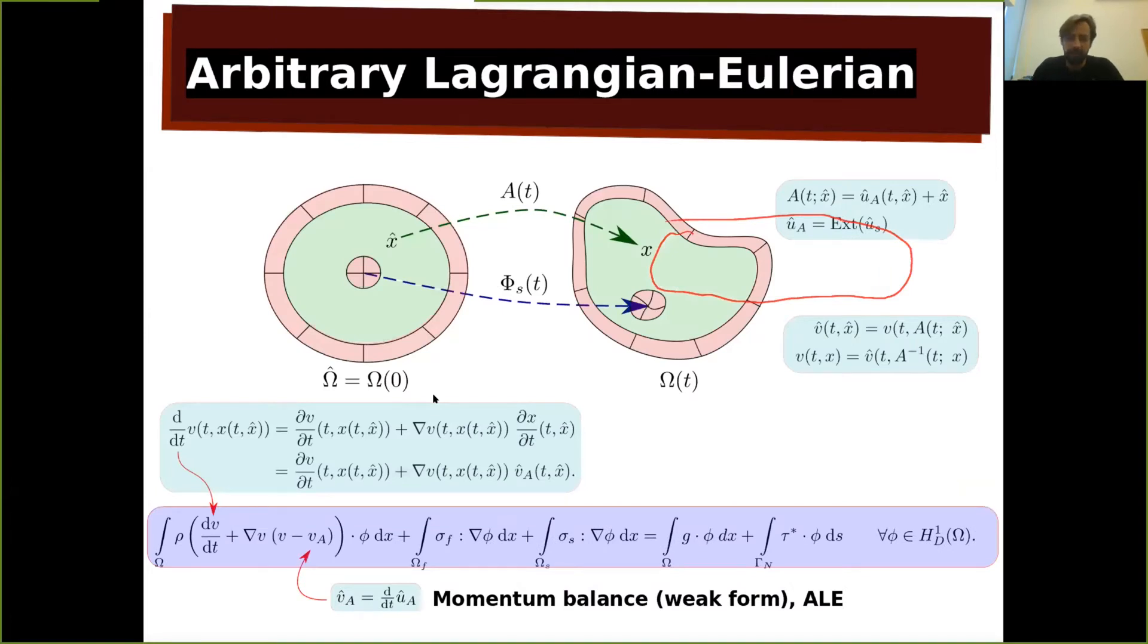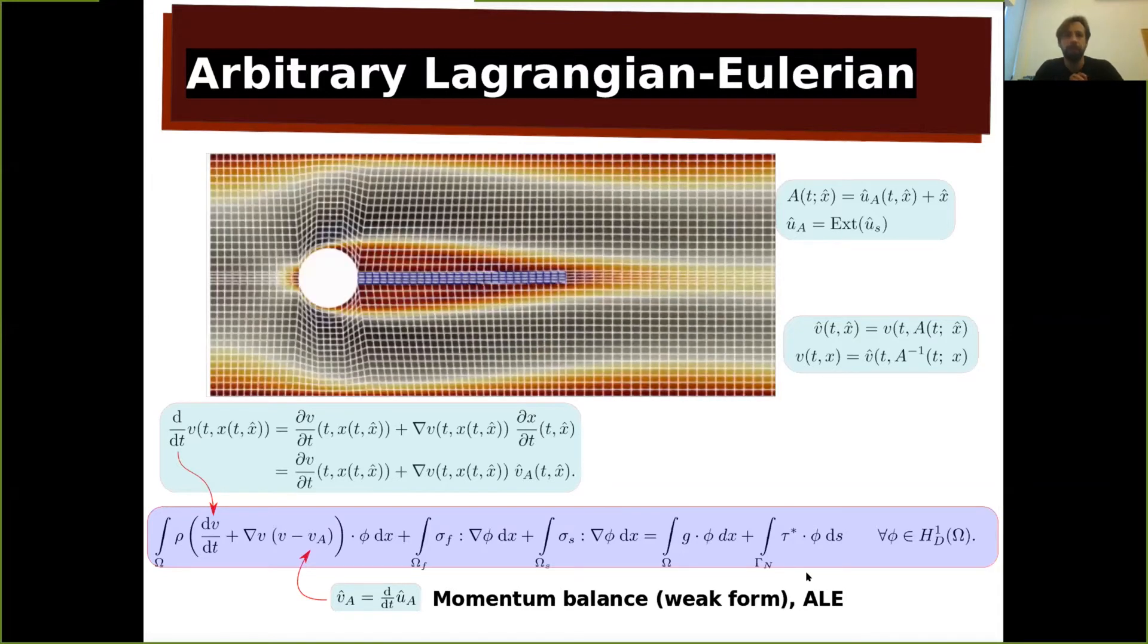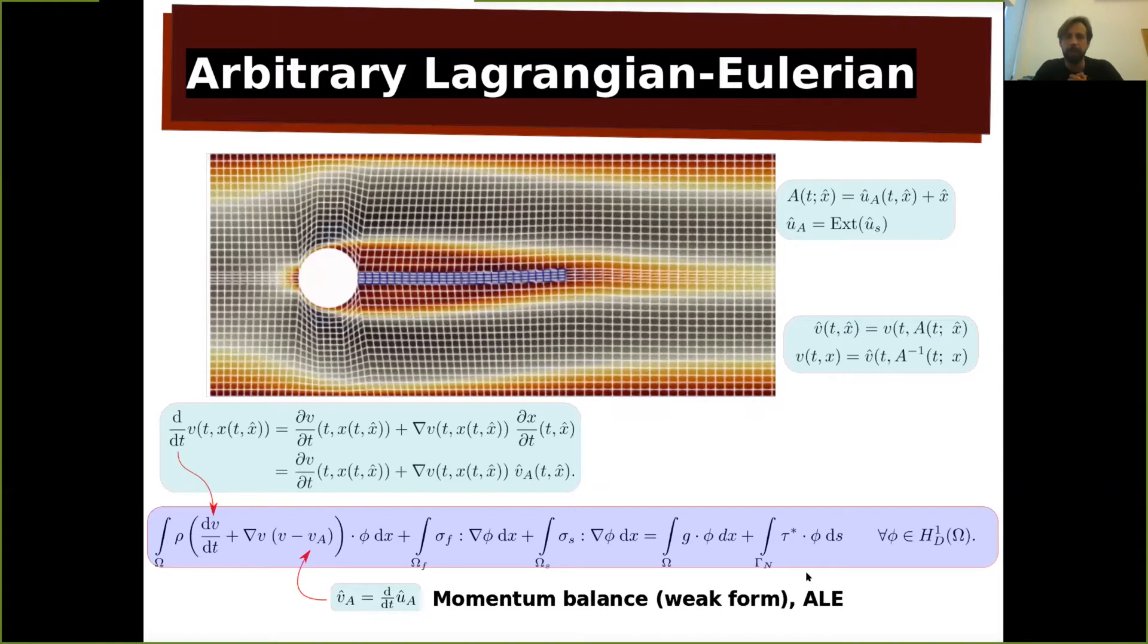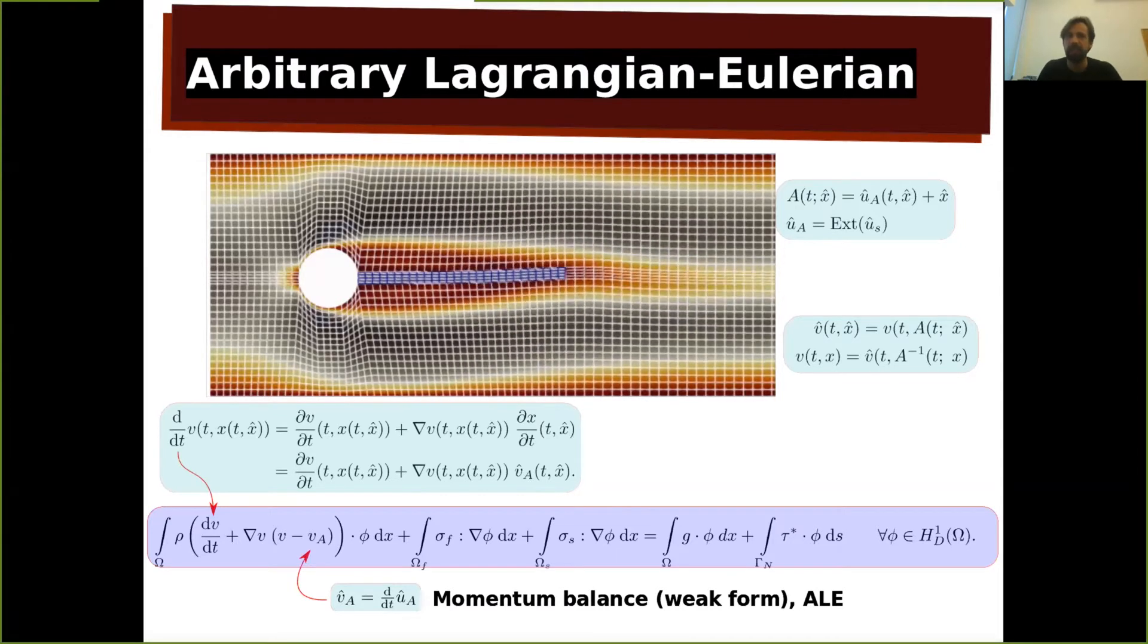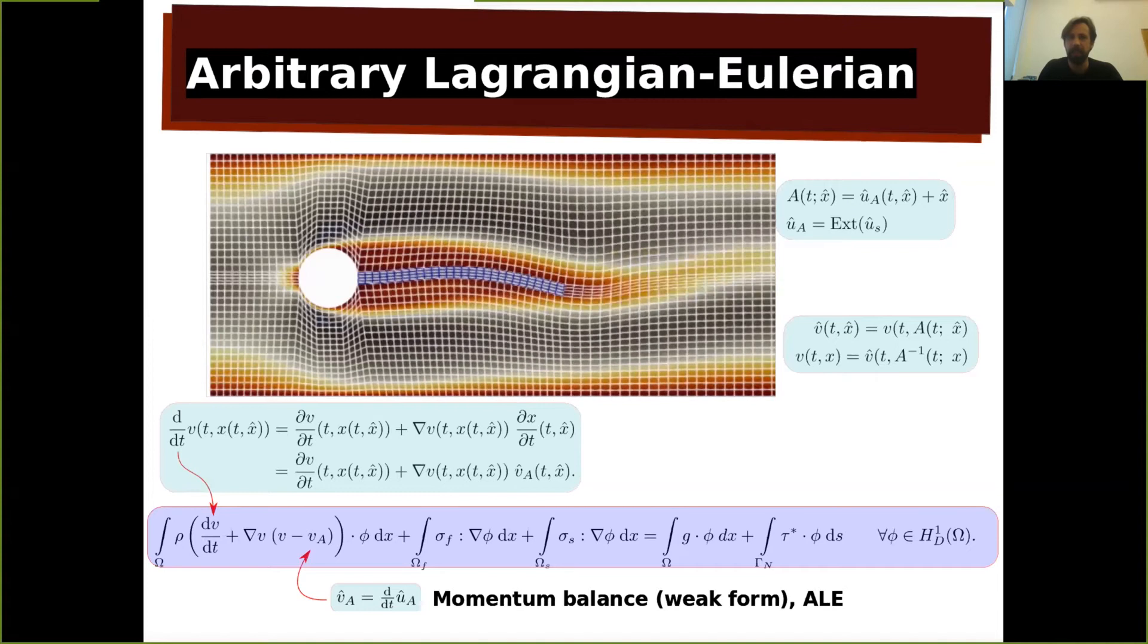So, the arbitrary Lagrangian-Eulerian formulation is when you trace everything in the undeformed configuration. For the solid, it's kind of natural because you have a natural formulation, but for the fluid, you've got some kind of arbitrary and that's this kind of, it is called ALE. So after you plug in the interface condition, you get quite a nice equation. So in arbitrary Lagrangian-Eulerian formulation, it looks like that. So this mesh represents the initial configuration and it moves when the whole thing moves.